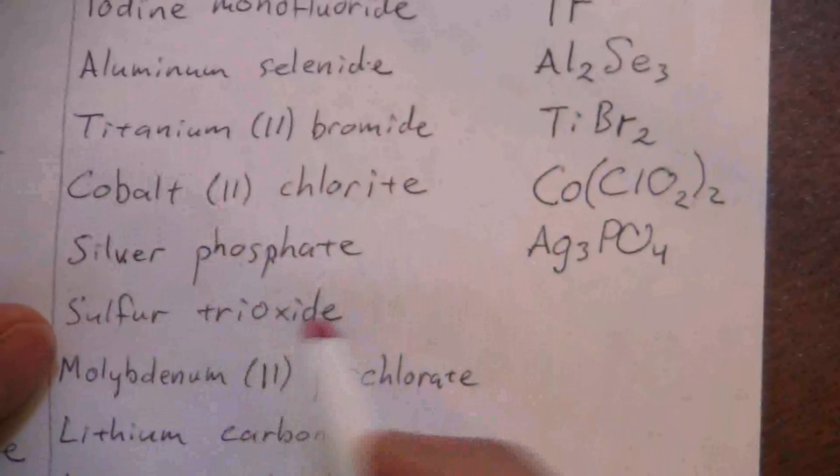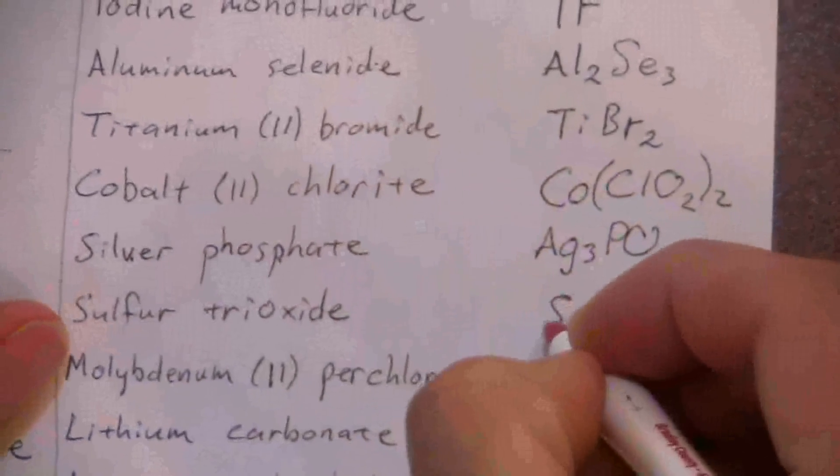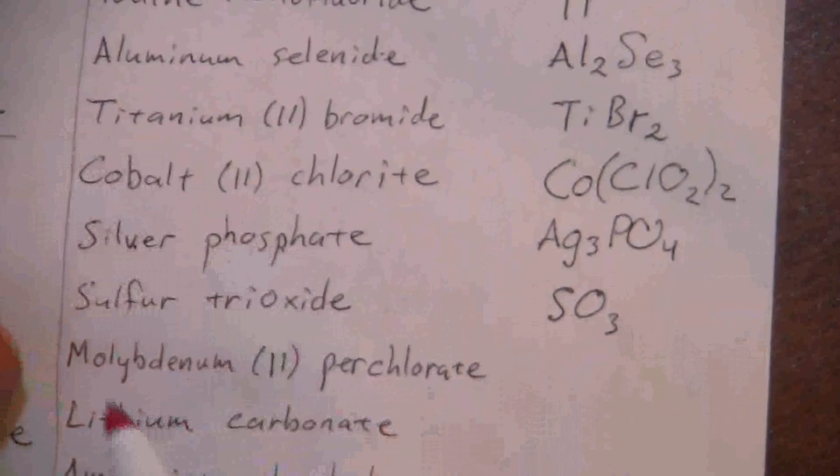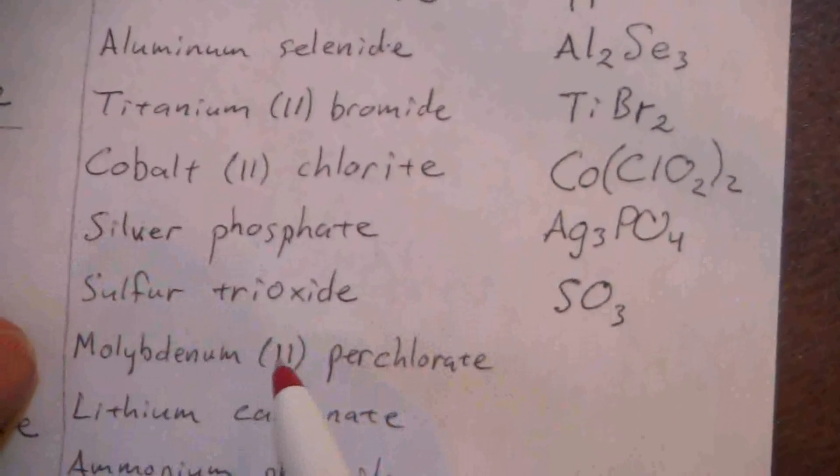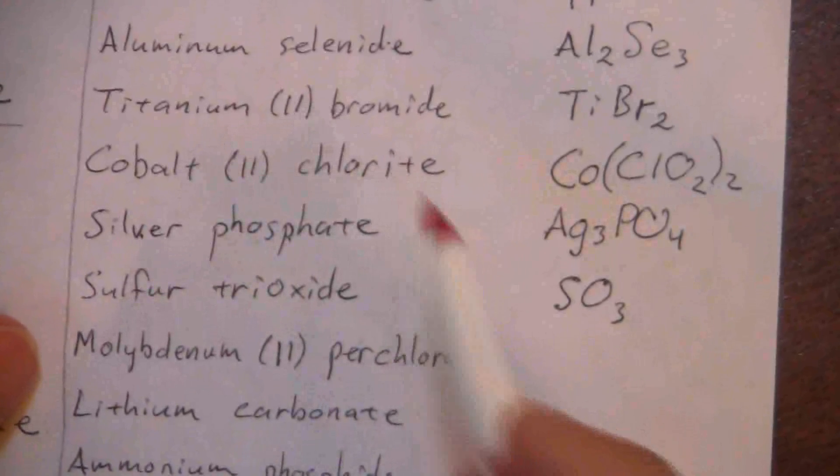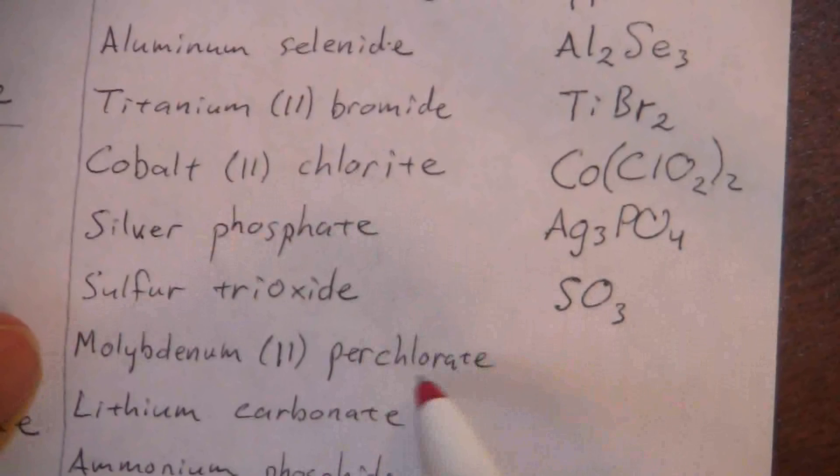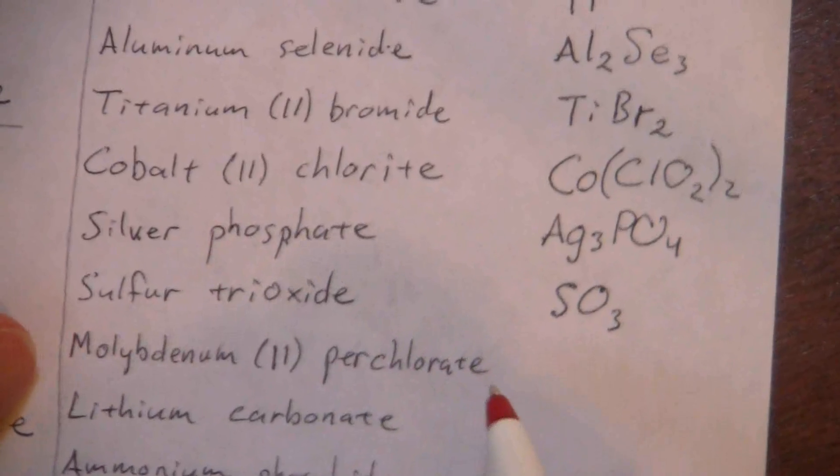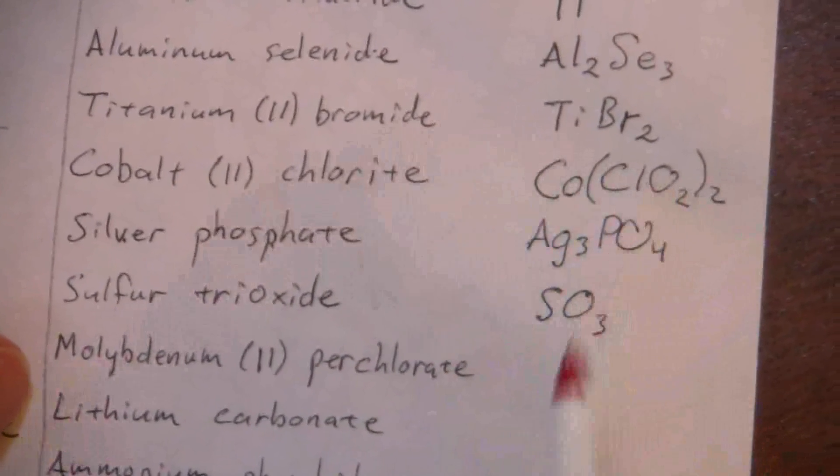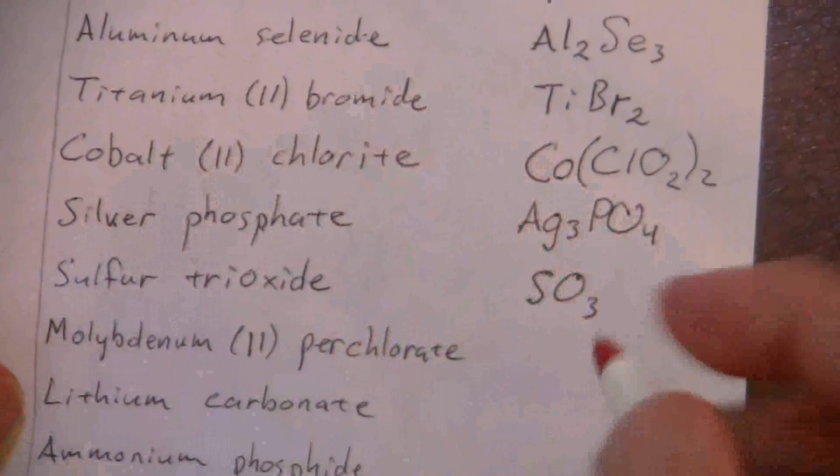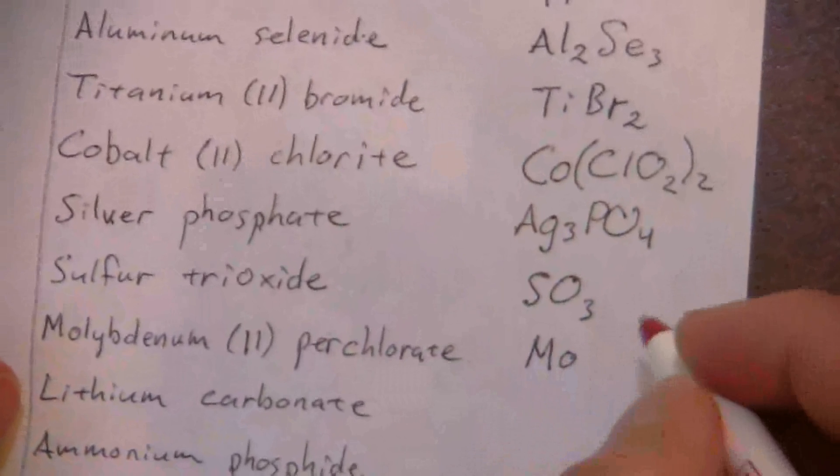Molybdenum (II) perchlorate. Part of that series. This is the one that has more. We have chlorite ClO2, chlorate ClO3, perchlorate would be ClO4 with a negative charge just like the others. I need two of those to balance out the positive two of molybdenum. Molybdenum ClO4 subscript 2.